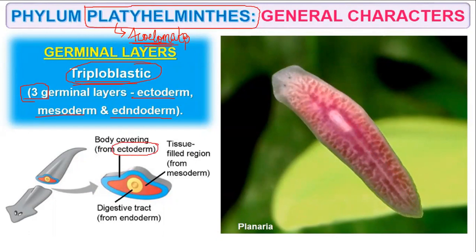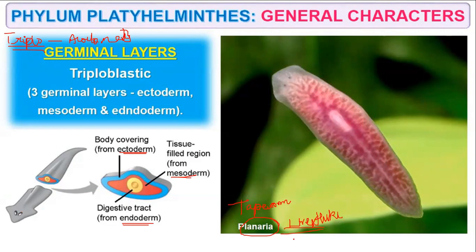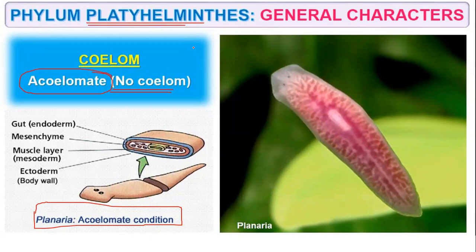Their body outer layer is covered by ectoderm, the middle is mesoderm, and the inner part is endoderm. If you cut this organism into two equal parts, you will find three different layers: endoderm, mesoderm and ectoderm. Remember the exam question: name a triploblastic acoelomate phylum, or which among the following is an example of a triploblastic acoelomate organism? It could be planaria, tapeworm, or liver fluke. All Platyhelminthus are acoelomate — no coelom is present.